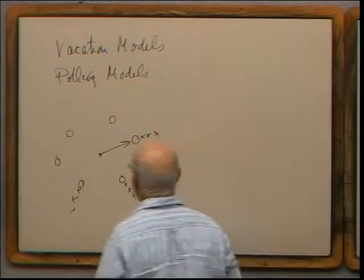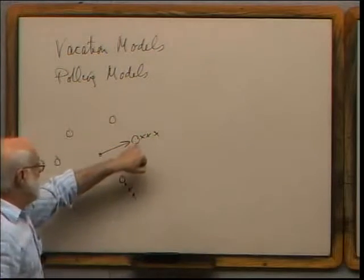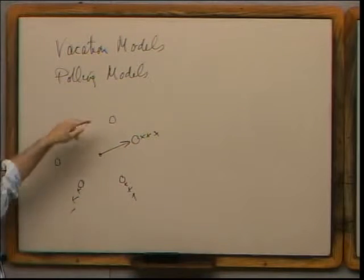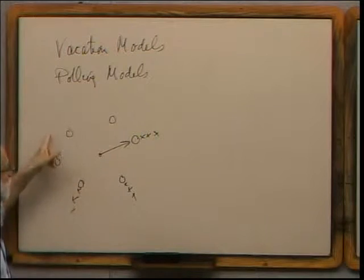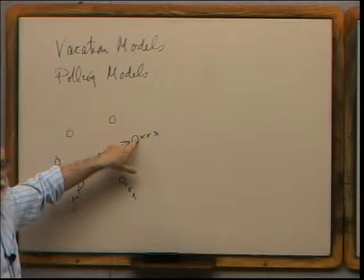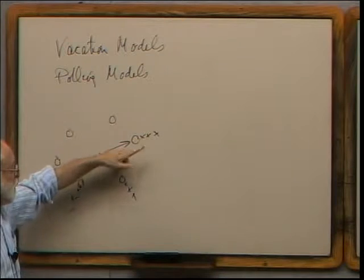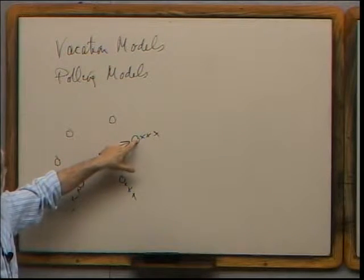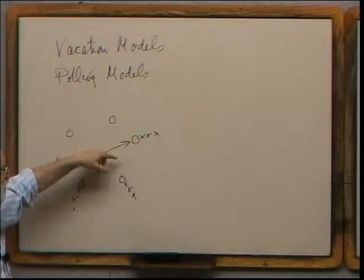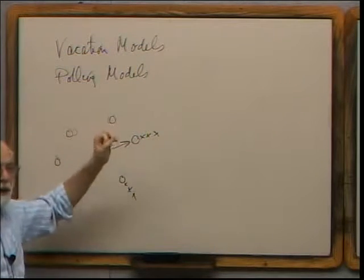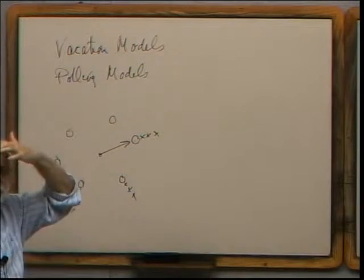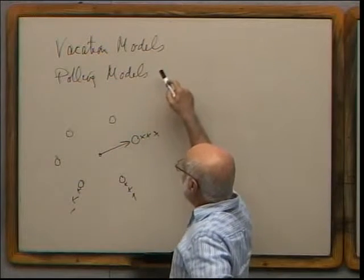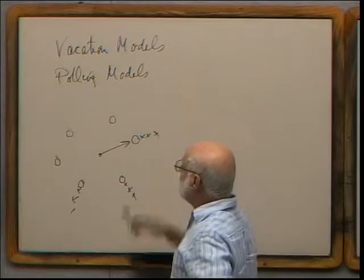In the polling model, the times you spend at each queue are dependent on each other. The more time you spend at one queue, the more customers accumulate at the other queues, and therefore the more time it takes to get back to your target queue. When you get back, more customers are waiting, so it takes longer before you start the next cycle — which means more customers accumulate again. So these cycles are positively correlated.